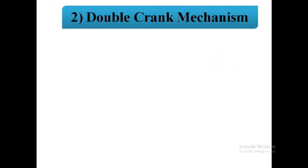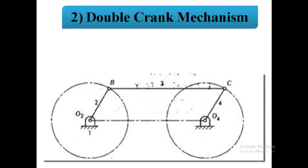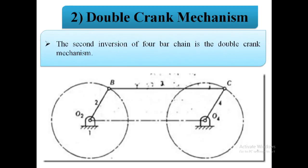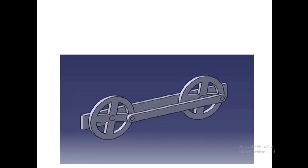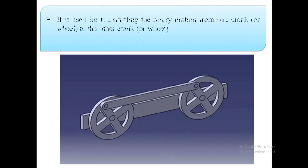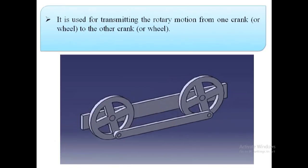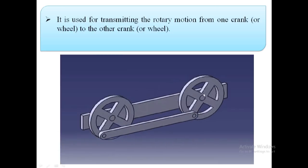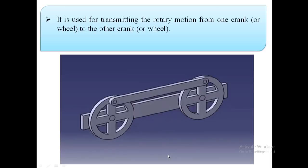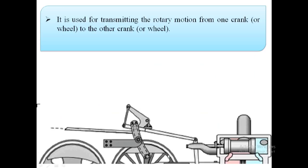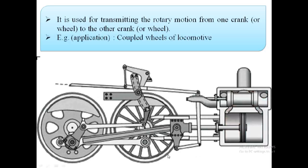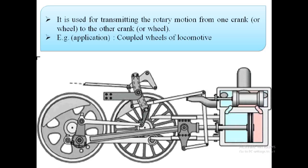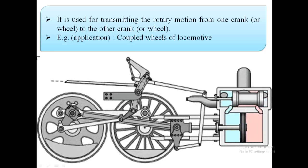Second inversion — double crank mechanism: the second inversion of four bar chain is the double crank mechanism. It is used for transmitting the rotary motion from one crank or wheel to the other crank or wheel. The example or application is the coupled wheels of a locomotive, as shown in the image.